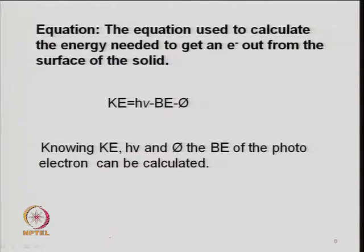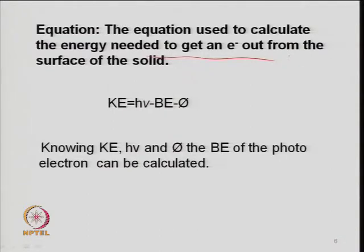The XPS equation discussed last time: kinetic energy (E_k) = hν (energy of the photon) minus binding energy (E_b) minus the work function (φ), which depends on the type of instrument. This equation correlates the energy needed to remove an electron from the surface of a solid. If you know the kinetic energy, that can be measured, and then you can find out the binding energy of the photoelectron.